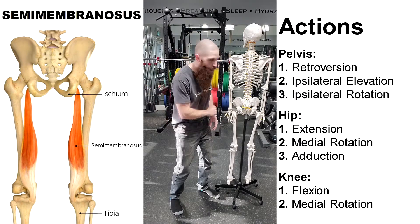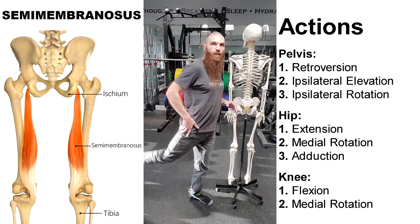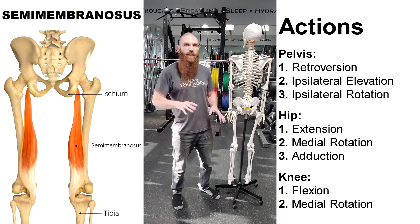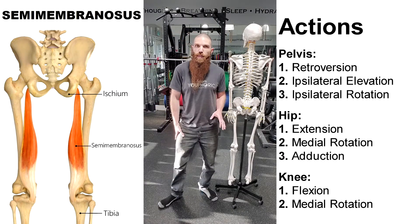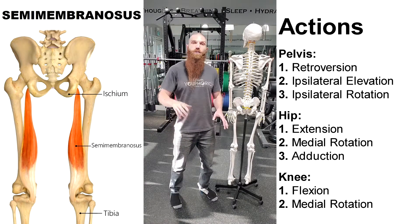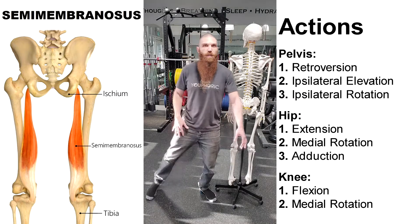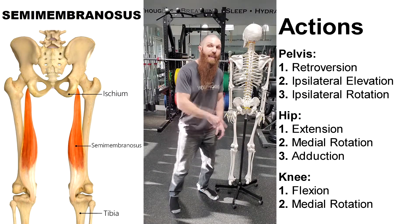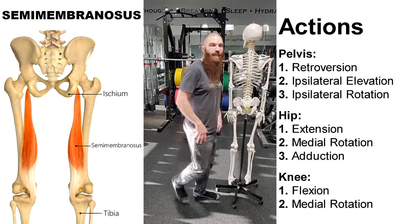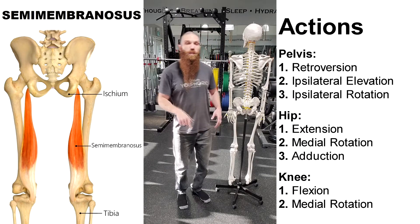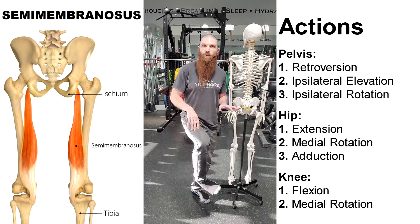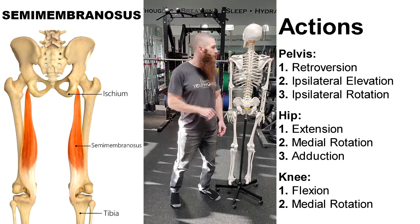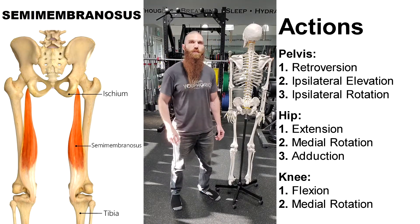At the hip, its main action is going to be extension of the femur, and then it's also going to have a component of medial rotation — bringing the femur in toward the midline — and also adduction of the femur, bringing the thigh in toward the midline. At the knee, its main action is going to be flexion of the knee, and when the knee is bent, it also has a component of medial rotation of the knee.